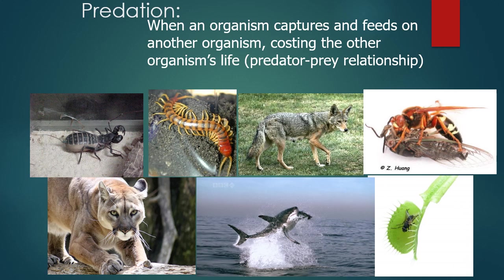Our next term is predation. This is when an organism captures and feeds on another organism, costing the second organism — the prey — its life. Predators exist both on land and in the oceans and in the air. Keep in mind, predators are not limited to being only animals. With the exception of the Venus flytrap and the great white, the rest of these examples — the vinegaroon, centipede, coyote, tarantula hawk wasp, and mountain lion — are all native inhabitants of our region. Predation can happen in any environment and can be done by plants as well.